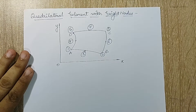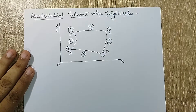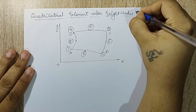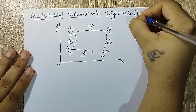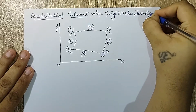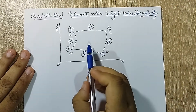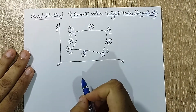Hello everyone, welcome to the next session of finite element analysis. In this session, I am going to solve another derivation of quadrilateral element with 8 nodes. This is also called as serendipity. Serendipity means when you don't have a node at the center.